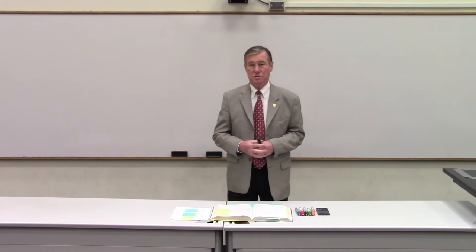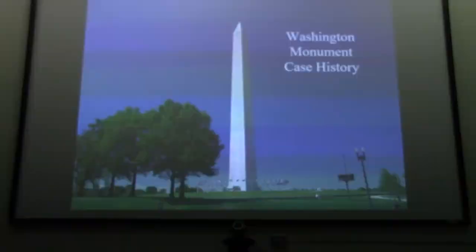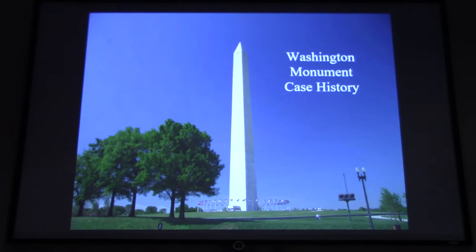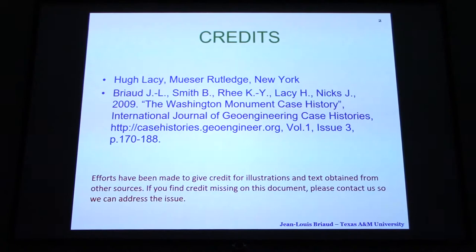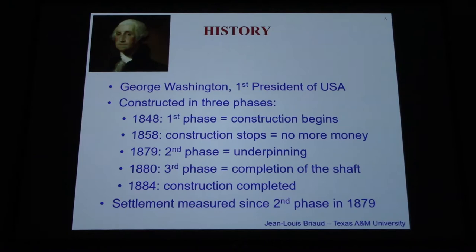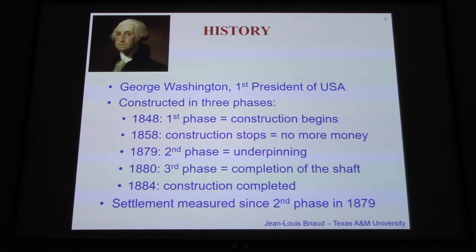We're starting our discussions about deformability of soils, and we're going to start with a case history — the story about the Washington Monument. Washington Monument in Washington DC. George Washington was the first president of our country. He was elected — he was a general — and got elected in 1789. He served two four-year terms until 1797, and he died in 1799.